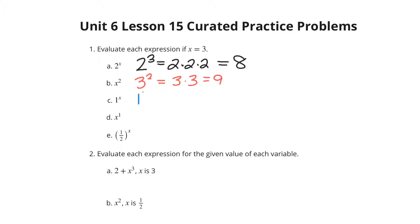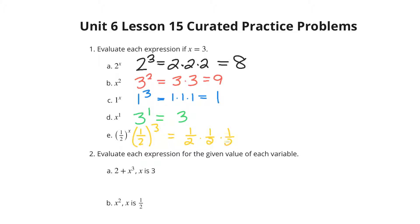Next, we have 1 to the x, where x is 3. This is 1 times 1 times 1, which is just 1. Then we have x being 3 to the 1st, which is just 3. And lastly, we have 1 half to the 3rd, which is 1 half times 1 half times 1 half, which is 1 times 1 times 1 over 2 times 2 times 2, so 1 eighth.